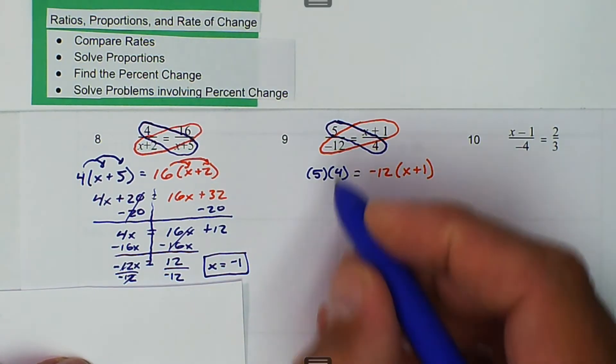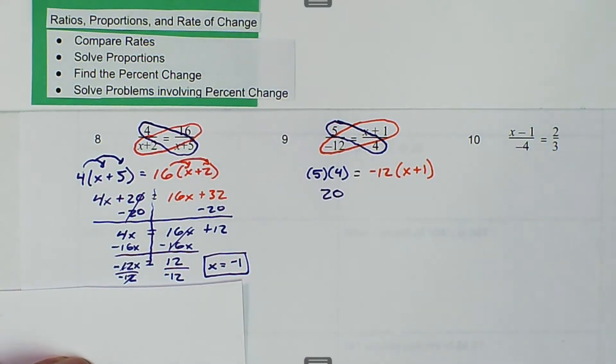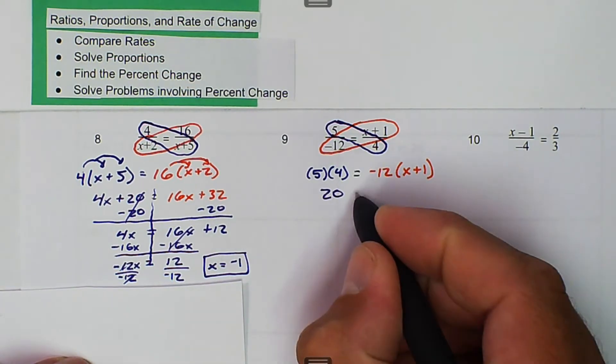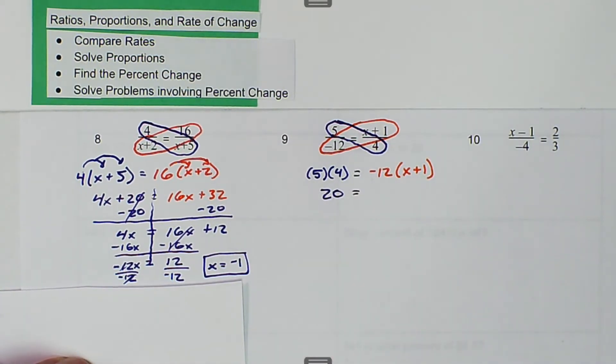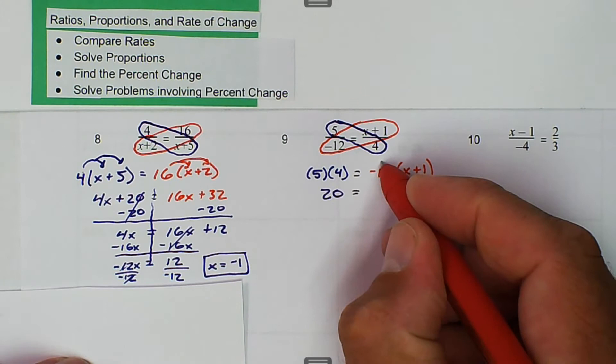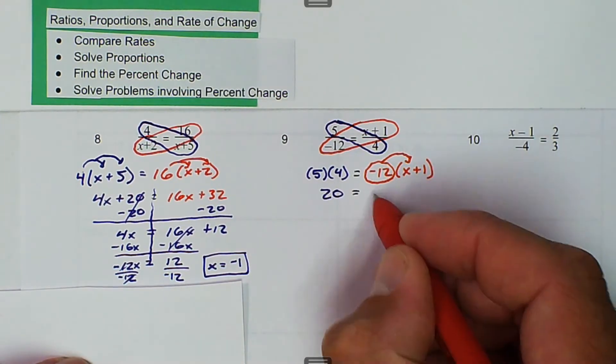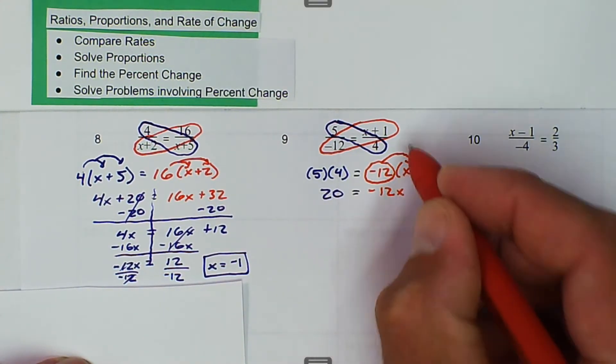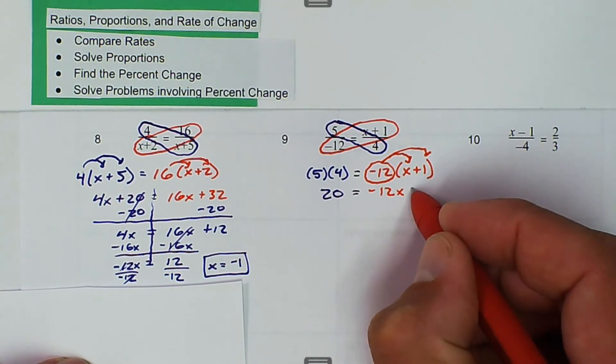So on the left side, we get 20. 5 times 4 is 20. And on the right side, we get to distribute the negative 12. We want to distribute the whole thing, including the sign. So we get negative 12x minus 12.